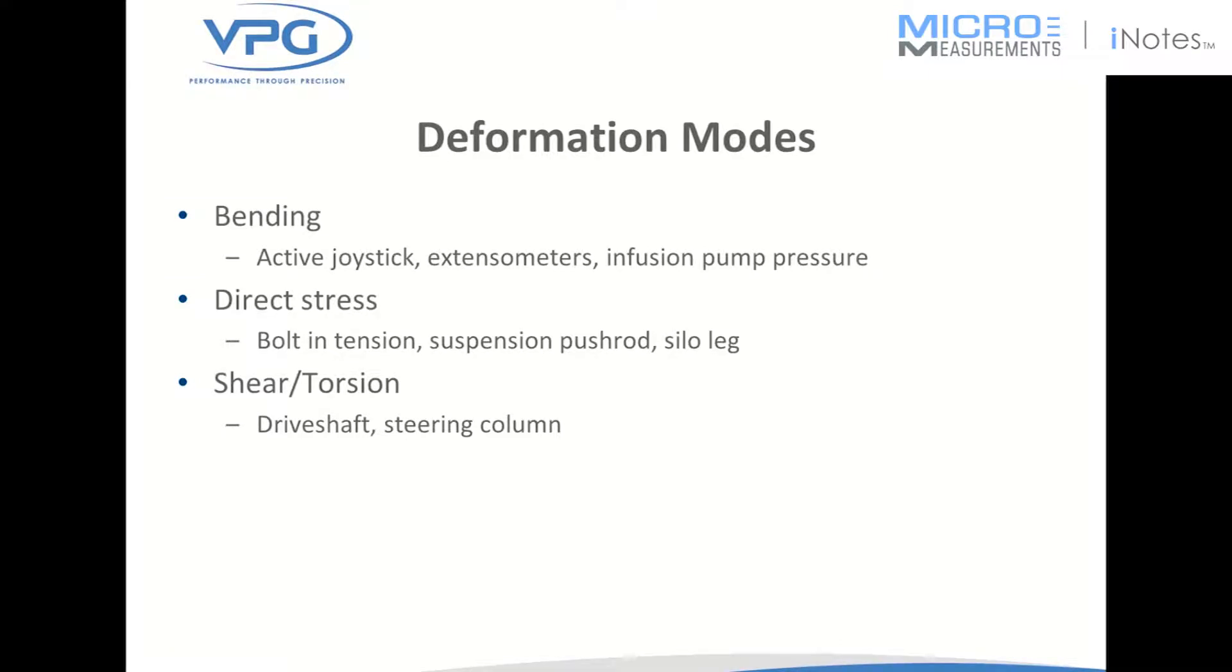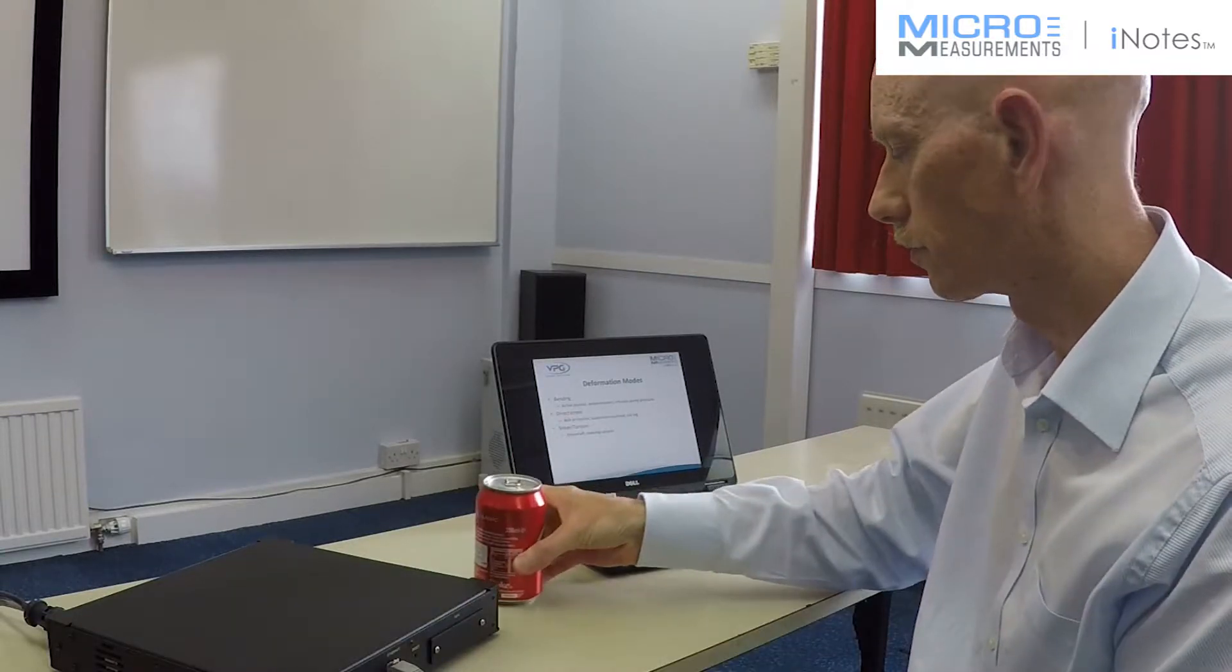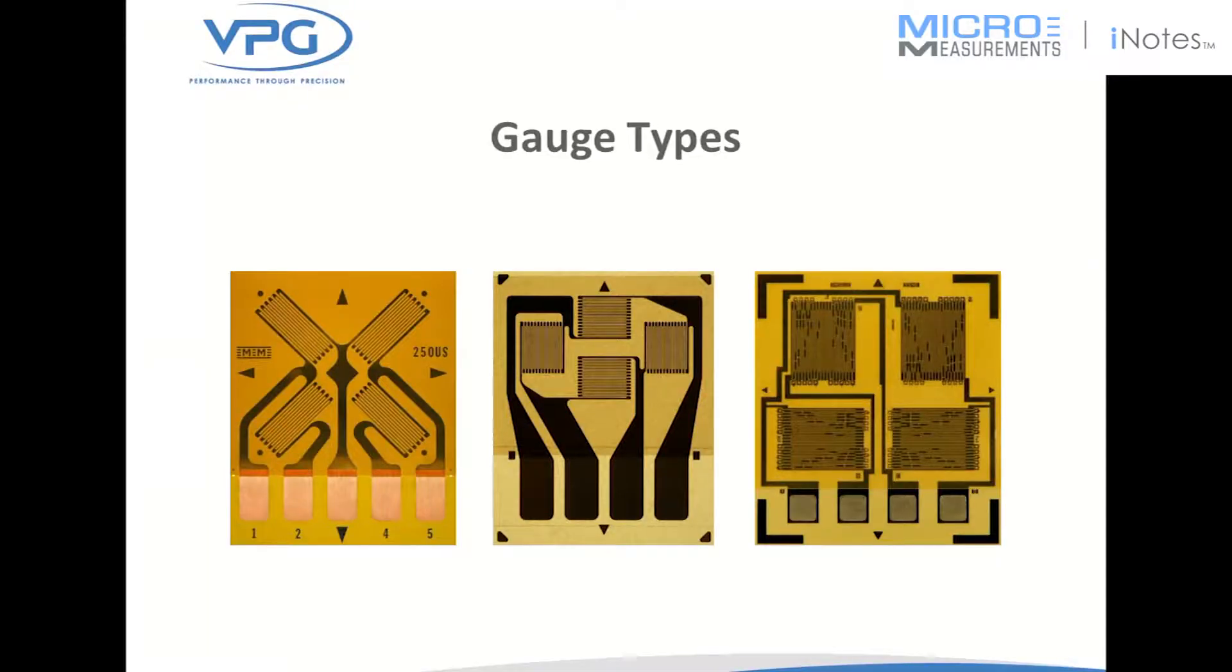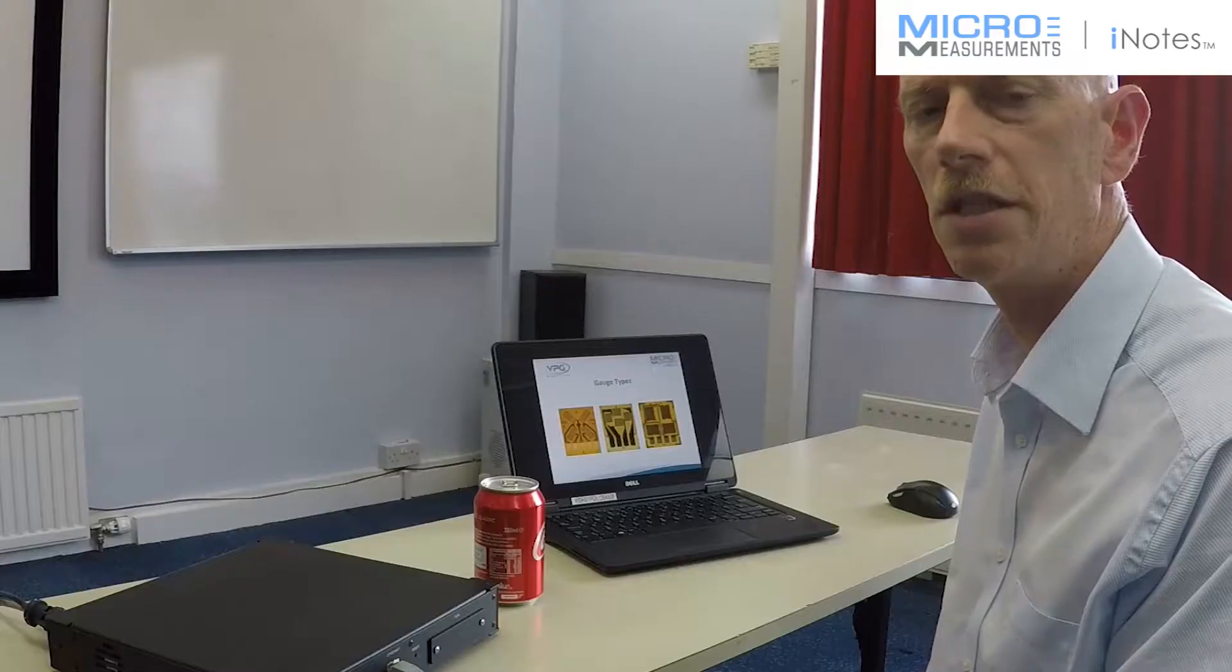And then we're going to concentrate on the torsion measurement. So, for example, this could represent a drive shaft from a ship and it would measure the power output from the engines. We're going to use a left-hand pattern, which is a torsion pattern, as you can see, with five solder pads. And this allows for some balancing circuitry to be integrated into the circuit.